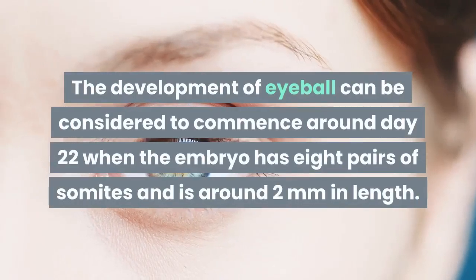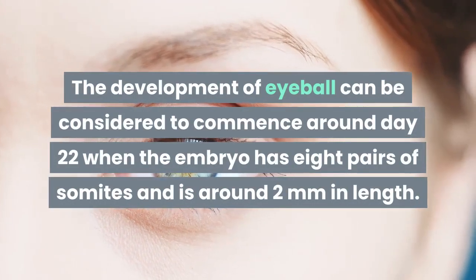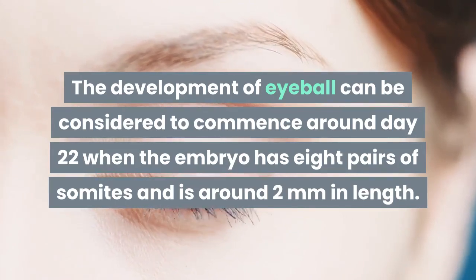The development of the eyeball can be considered to commence around day 22 when the embryo has eight pairs of somites and is around two millimeters in length.